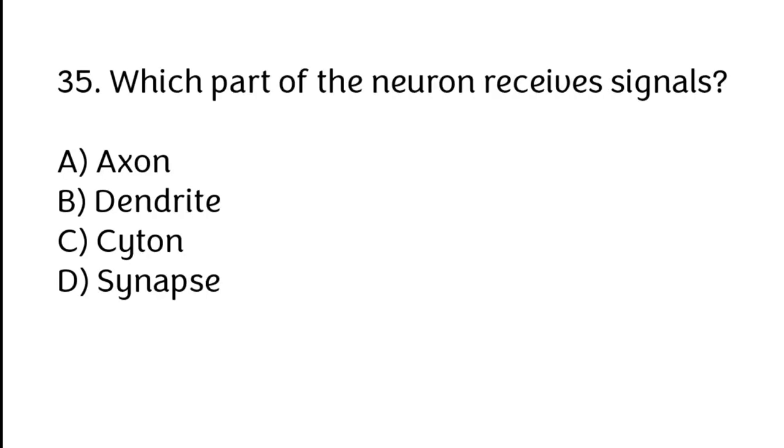Which part of the neuron receives signals? Correct answer is B. Dendrite.